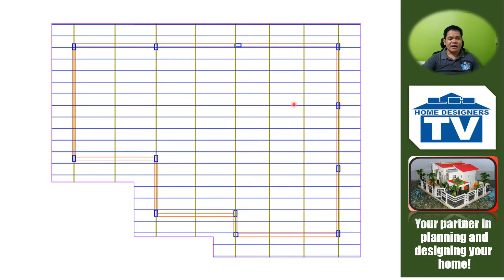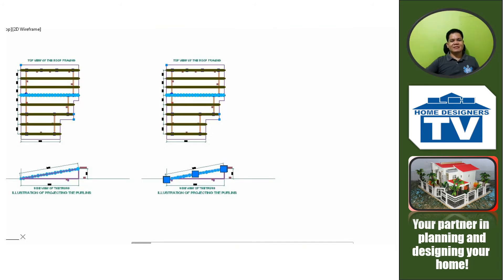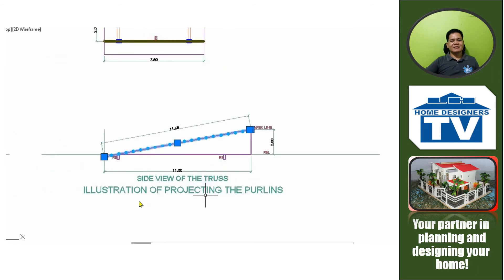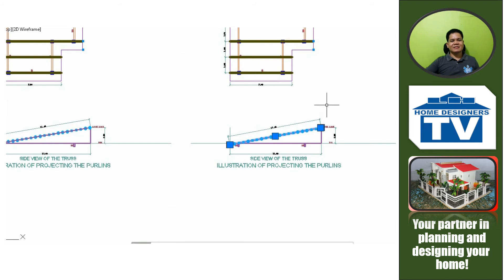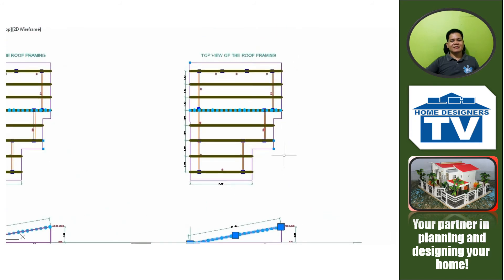On the next slide, I'm going to show you a sample of projecting the purlins from the side view. I'd like to show you the illustration of projecting the purlins from the side view of the truss. In this process, you're going to use the side view of the truss as the first-hand drawing from which you project the distances of the purlins to your actual drawing of the roof framing plan.